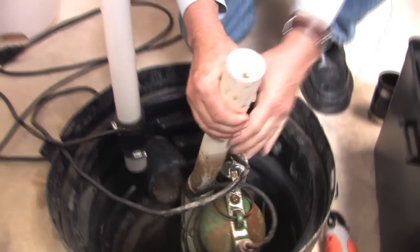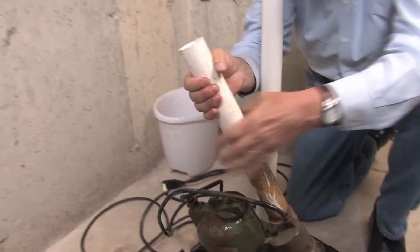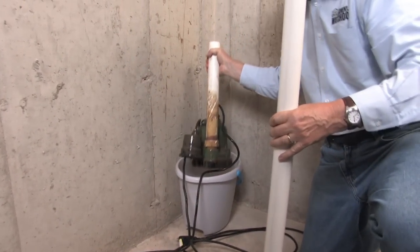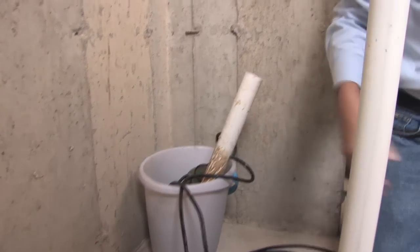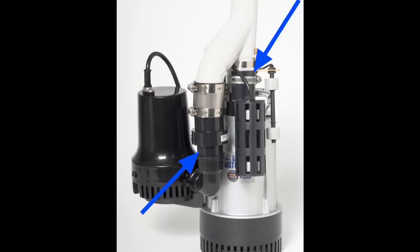Now unplug the AC pump and remove it from the sump pit. If there's a check valve on the discharge pipe of the existing system, remove it slowly. There will be water in the pipe above the valve. The basement watchdog system has two built-in check valves so you won't need any additional check valves.